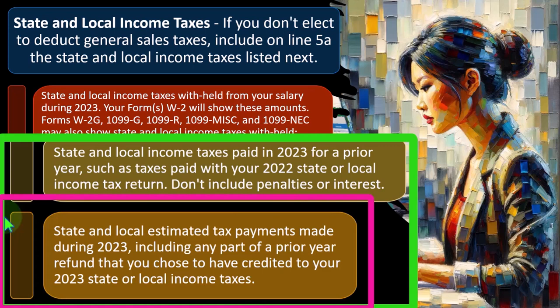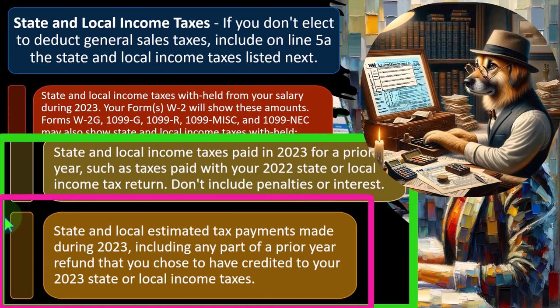State and local estimated tax payments made during 2023 include any part of a prior year refund that you chose to have credited to your 2023 state or local income taxes. In other words, if you had a refund of state taxes in 2022 and instead of receiving the money you said, keep it as an estimated payment for 2023, that would be like getting a check and paying it back as an estimated payment. Therefore, it should be treated as a cash payment made in 2023 and therefore possibly deductible in tax year 2023.